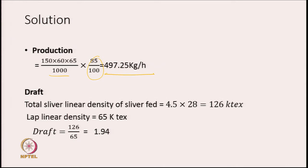That means this machine produces almost 500 kg per hour. If we want per shift, we multiply 497.25 by 8 hours per shift, and whatever value we get that becomes the production in kg per shift at 85% efficiency. This is a very straightforward simple calculation — basically substitution of data with not much complexity in it.